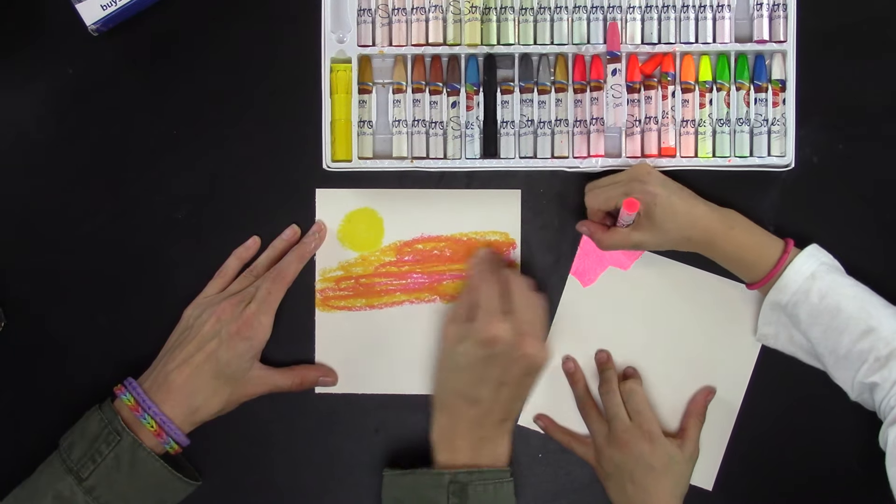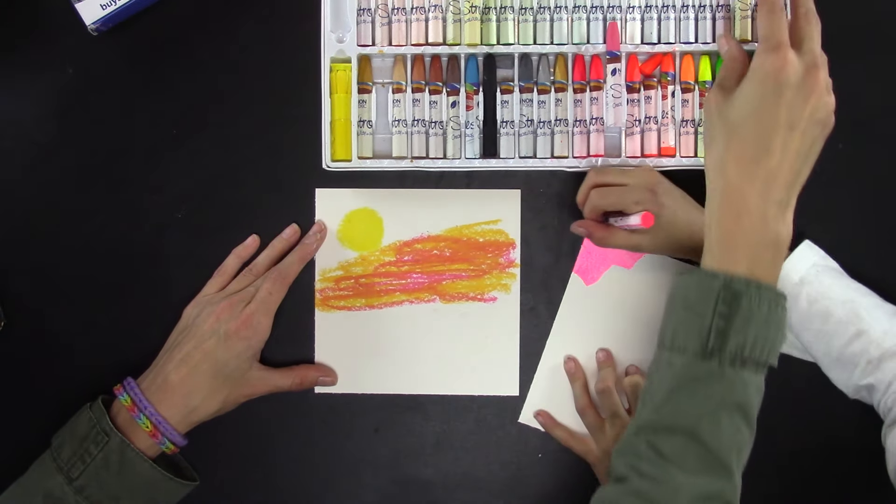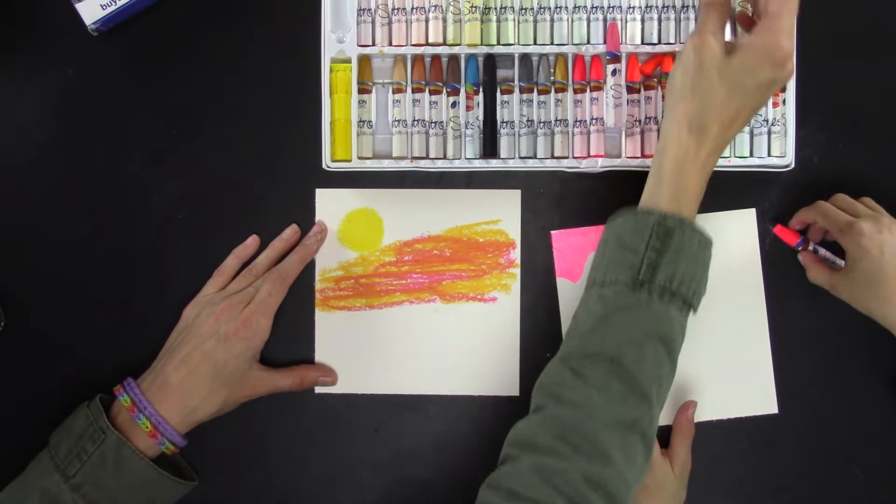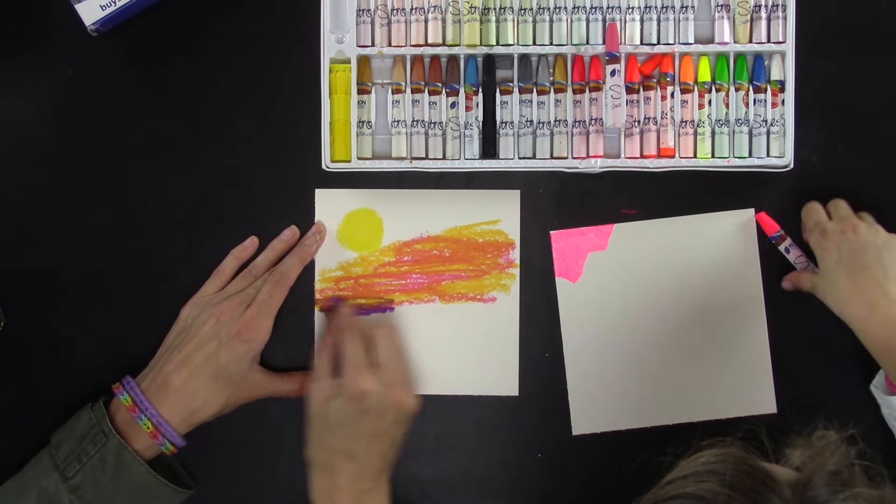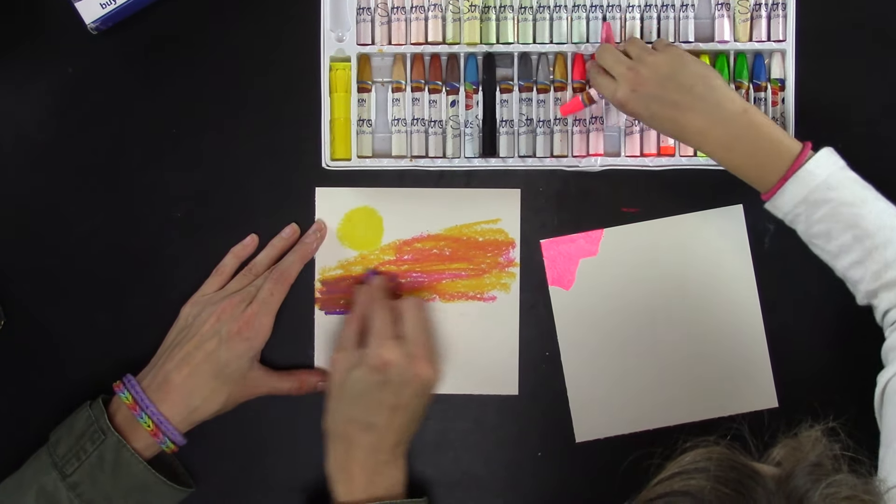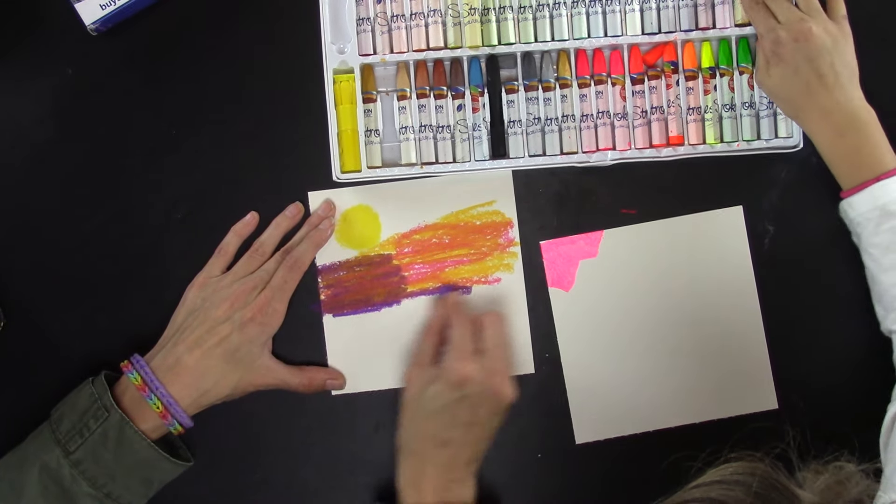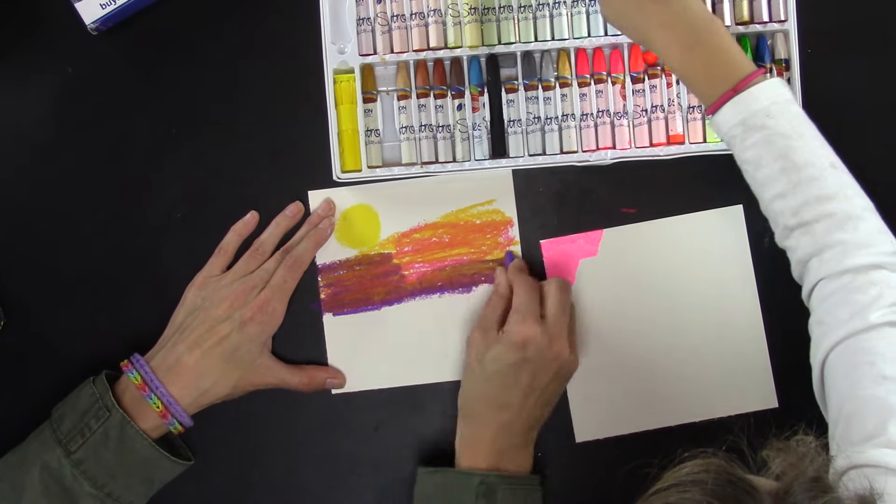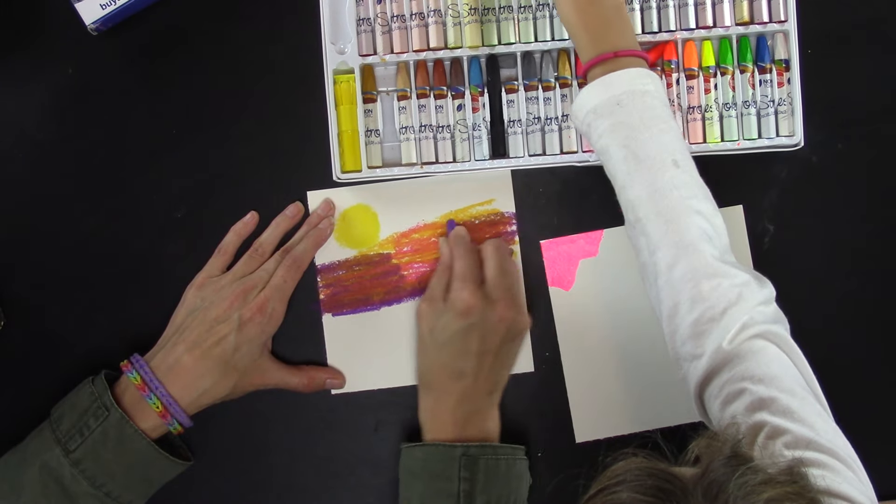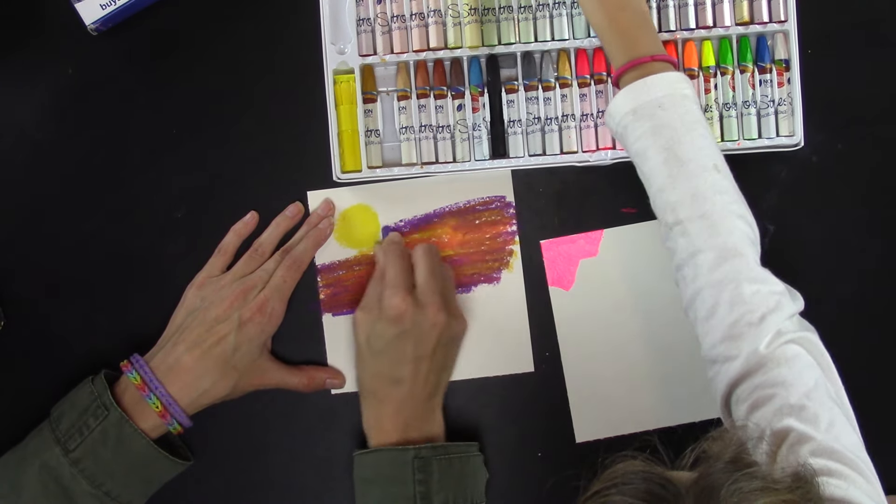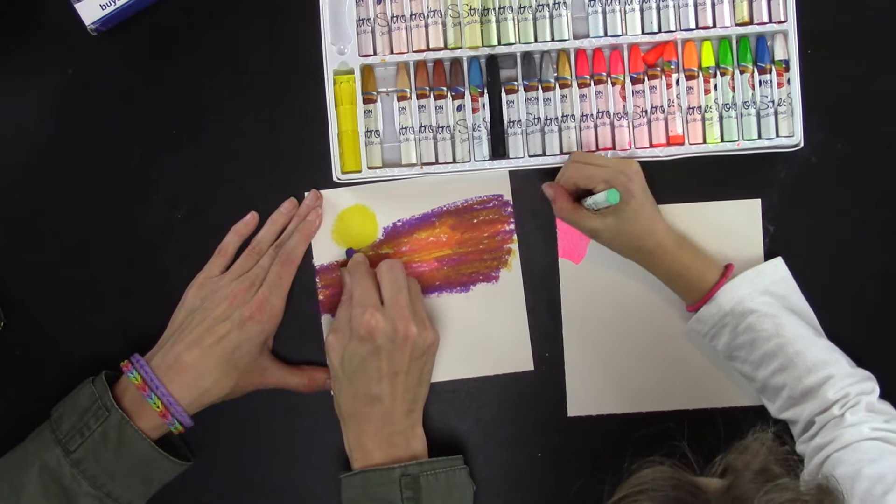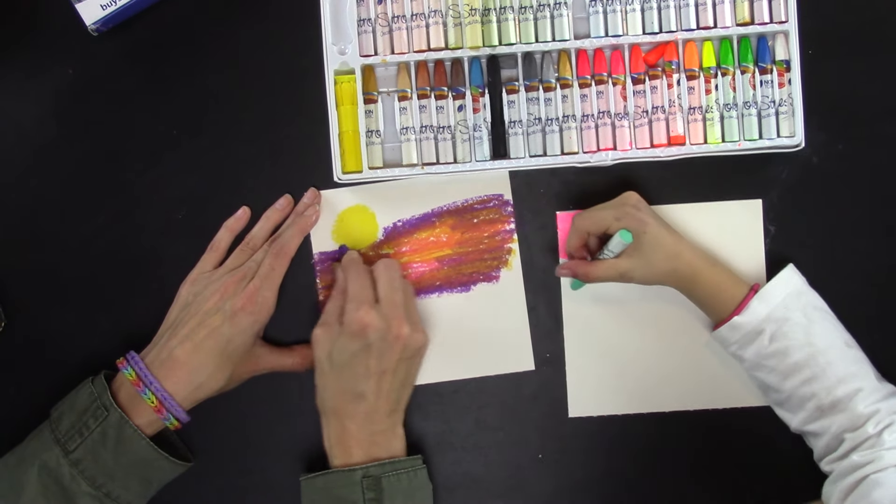It's really fun to layer colors on top of each other. So like I can put this purple over it like this. It darkens the color, makes it kind of a brownish color, but you can still see some of the pink in the yellow. It's pretty fun.